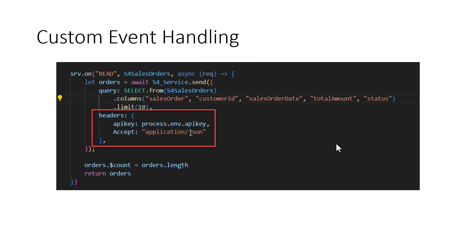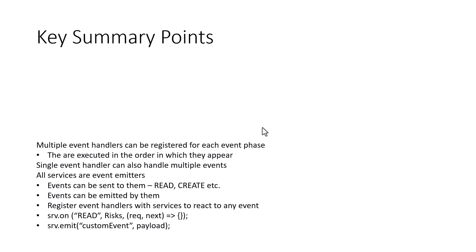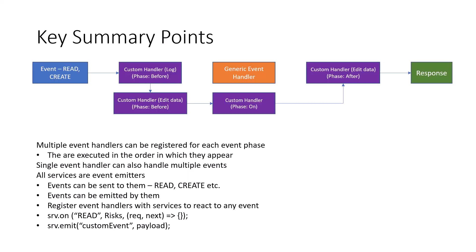In our case, our code is going to look something like this: we are going to take ownership of the read event using the 'on' phase, which signifies that you're taking ownership. We are going to take ownership of the S4 sales orders, and within the code, we are going to pass in the API key. The key summary points are that the service can handle multiple events — you can have multiple before event handlers — and the service can also emit events, though we're not going to cover emitting events in this session.